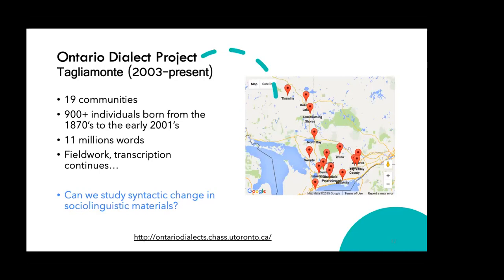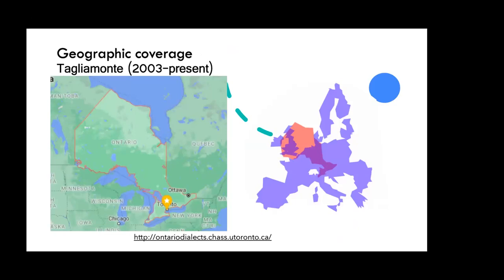The transcription enterprise alone is extremely time consuming and continues in my lab all the time. For those of you in Europe, the geographic coverage is significant: Ontario — outlined in red on the slide — with Toronto at the bottom in yellow. On the right, the province of Ontario is superimposed on the UK and Europe. The geographic area of Ontario stretches from the far north of Scotland right down to Switzerland.